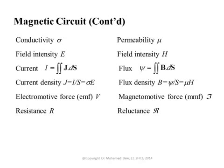In electric circuits we talk about electromotive force, we call it voltage. In magnetic circuits we talk about magnetomotive force, which is equal to Ni — number of turns multiplied by the current — or is equal to HL, where L is the average contour around your magnetic circuit.